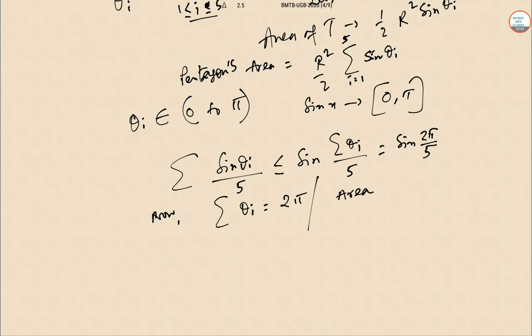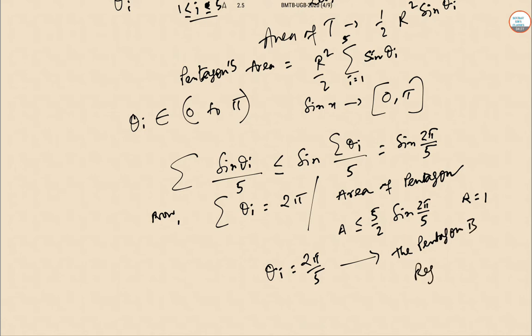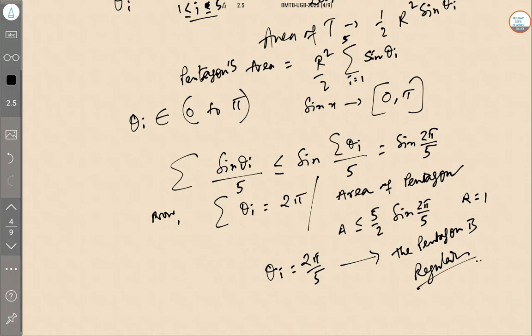So the area of the pentagon, A, is less than or equal to 5/2 sin(2π/5), as r equals 1. This is the structure, and equality is achieved when theta_i equals 2π/5, so that is only when the pentagon is regular. Hence the answer, and it is proved.